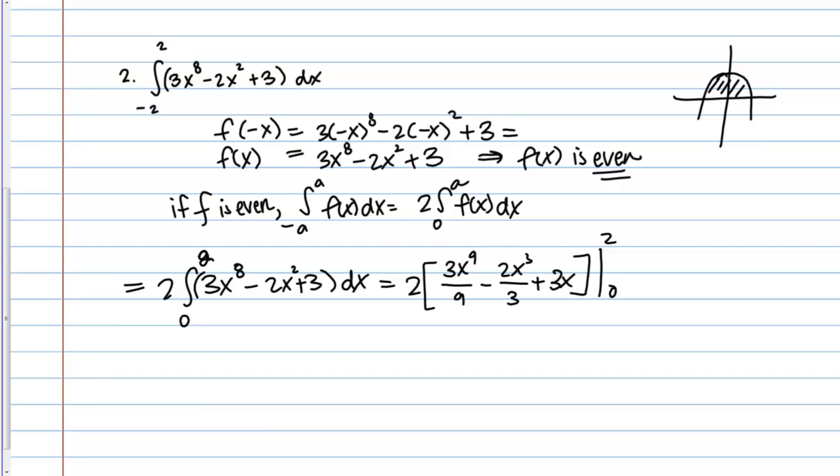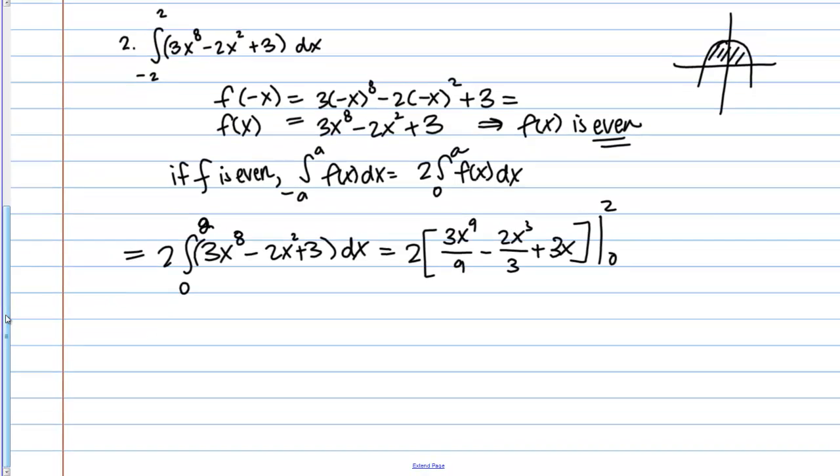Alright, so let's see if we can plug this in. So, we've got 2, 3 times 2 to the 9th over 9 minus 2, 2 cubed over 3 plus 3 times 2. That was plugging in 2. Let me add an extra layer of parenthesis here. Now, I need to plug in 0 and subtract that.